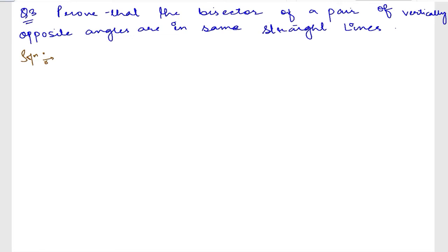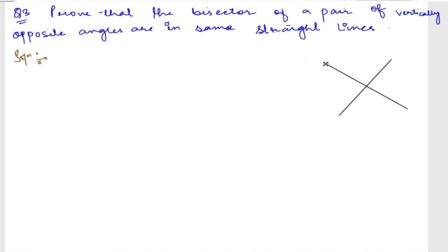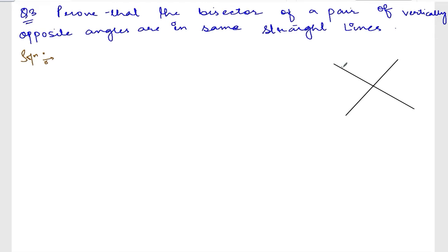First of all, let us draw vertically opposite angles. This is our vertically opposite angles. Let me name it: this is A, B, C, D, and this is our center O.